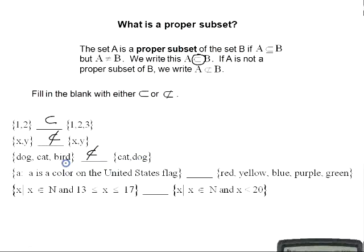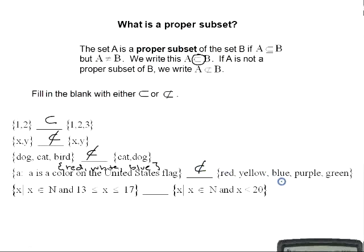The set {dog, cat, bird} is not a proper subset of {cat, dog} because bird is in the first set and not in the second. The set of all colors on the US flag — red, white, blue — is not a proper subset of {red, yellow, blue, purple, green} because white is not an element of that second set.